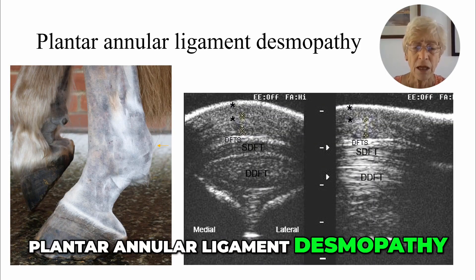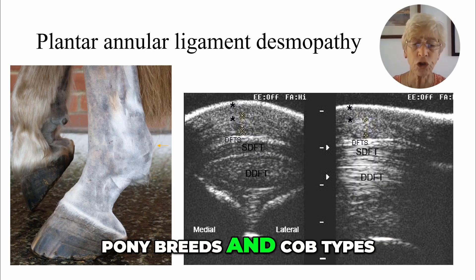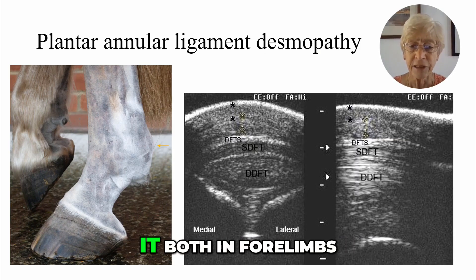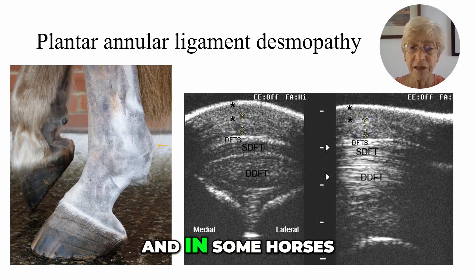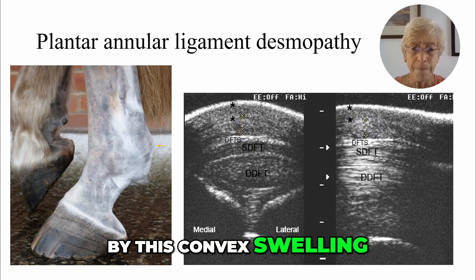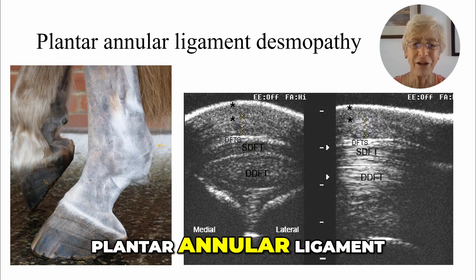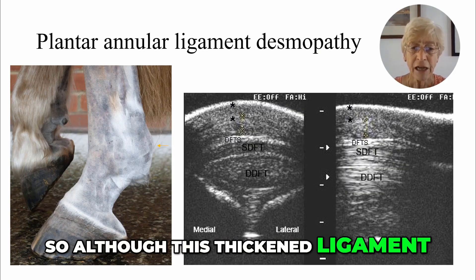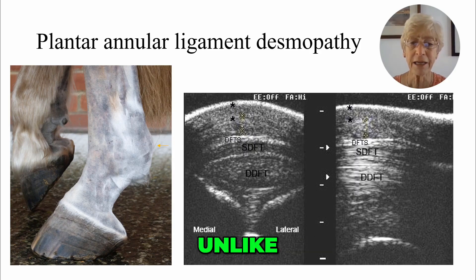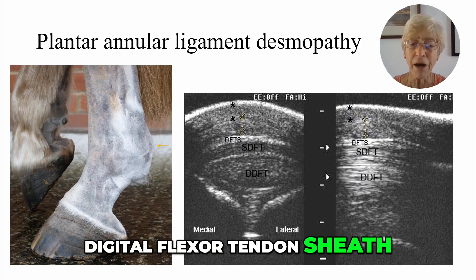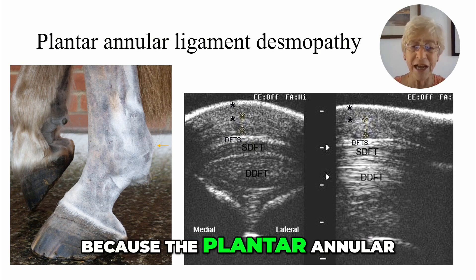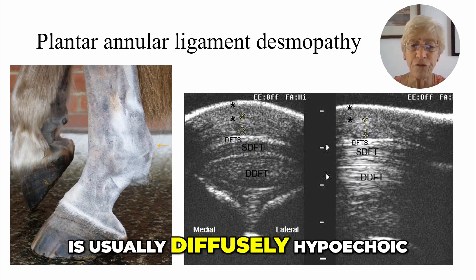Plantar annular ligament desmopathy occurs relatively commonly in pony breeds and cob types. I say plantar annular ligament because its injury occurs more frequently in hind limbs than in front limbs, but we can see it in both forelimbs and hind limbs, and in some horses all four limbs are affected. This is characterised by a convex swelling on the plantar aspect of the fetlock at the level of the plantar annular ligament. Although this thickened ligament creates pressure on the contents of the digital flexotendon sheath and that pressure can cause lameness, unlike primary constriction of the digital flexotendon sheath by the plantar annular ligament — which causes a concave swelling at this location — this causes a convex swelling because the plantar annular ligament is thickened and is usually diffusely hypoechoic.